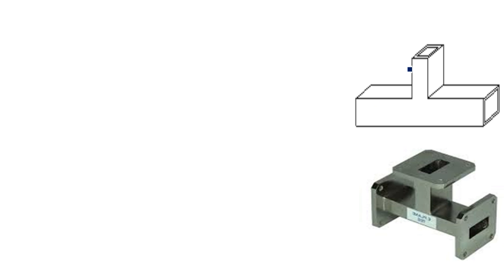In this video I am going to explain about E-plane T-junction. This is the second type of T-junctions in microwave T-junctions — first we have seen H-plane T-junction. This is the construction of E-plane T-junction, which is also having three ports: this is port 1, this is port 2, and this is port 3.